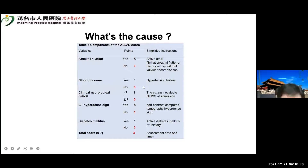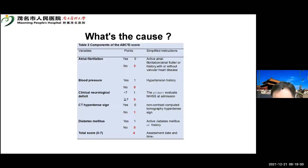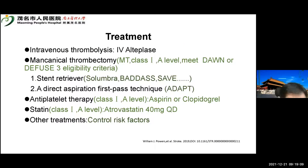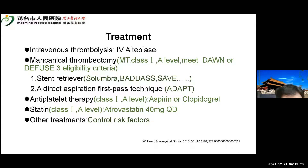Back to this case. We calculated the scores and the patient's score was 4, so we predicted the etiology was ICAS occlusion. Intravenous thrombolysis was not available because the time window was exceeded. Mechanical thrombectomy was therefore indicated.